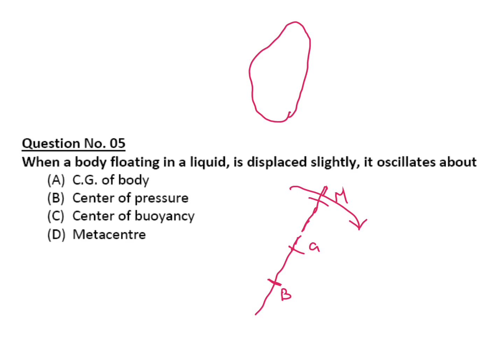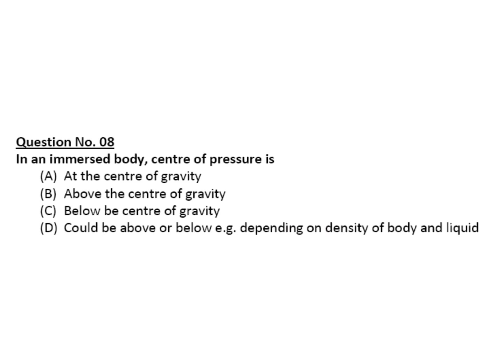Question is: in an emerged body, center of pressure is... h star formula is Ig sin squared theta divided by A h bar. A is area and h bar is distance of center of gravity.